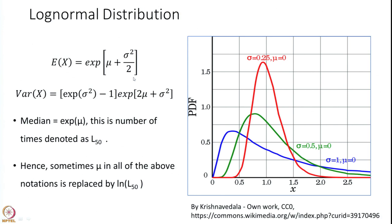The expected value and variance are expressed by specific formulas — I leave it for you to derive them. The exponential of mu is actually the median value of the distribution, denoted as L₅₀. So sometimes mu in all the equations is replaced by ln(L₅₀) because L₅₀ is exponential of mu, therefore mu is the natural log of L₅₀.